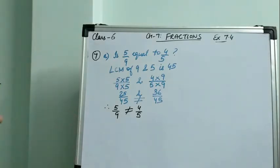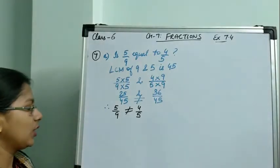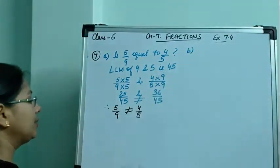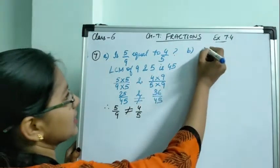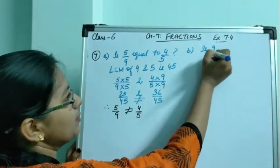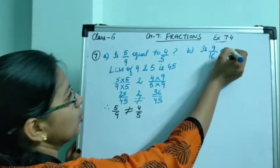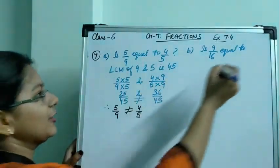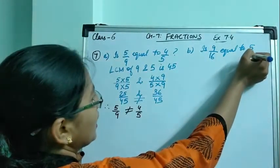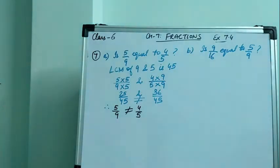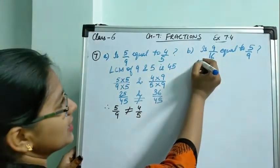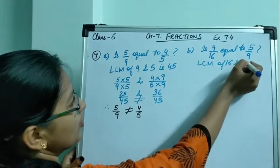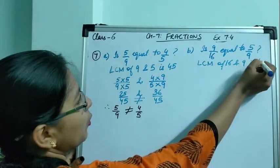I hope you understood the method — the basic method to check whether two fractions are equal or not. Similarly, for Part B: is 9 by 16 equal to 5 by 9? Again, the method is the same. First of all, we have to find the LCM of 16 and 9. LCM of 16 and 9 is 144.